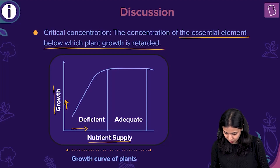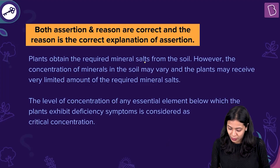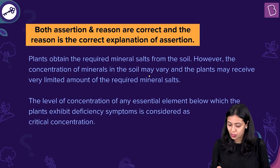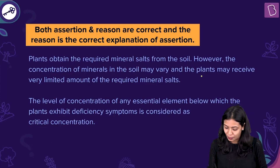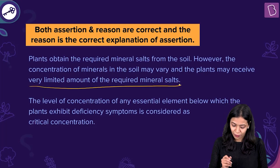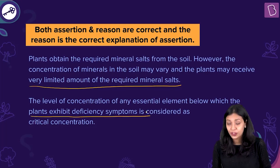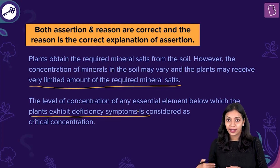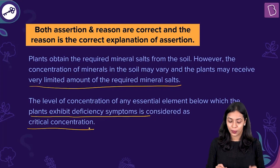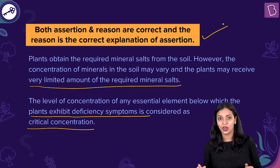The reason statement also correctly justifies the assertion. Plants obtain required mineral salts from the soil; however, the concentration of minerals in the soil may vary and the plant may receive very limited amounts. The level of concentration of any essential element below which plants exhibit deficiency symptoms or show retardation in growth is considered the critical concentration. Therefore, the correct answer is option A: both assertion and reason are correct and the reason is the correct explanation of the assertion.